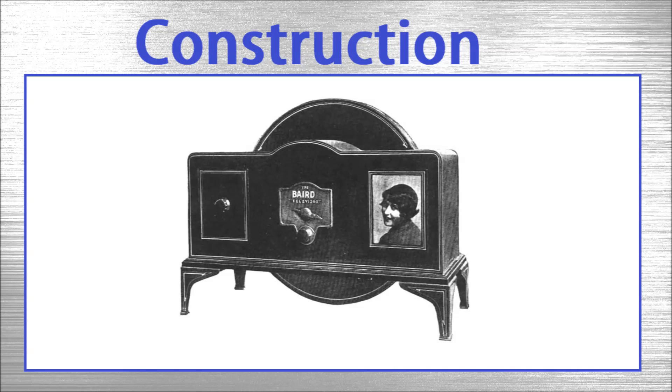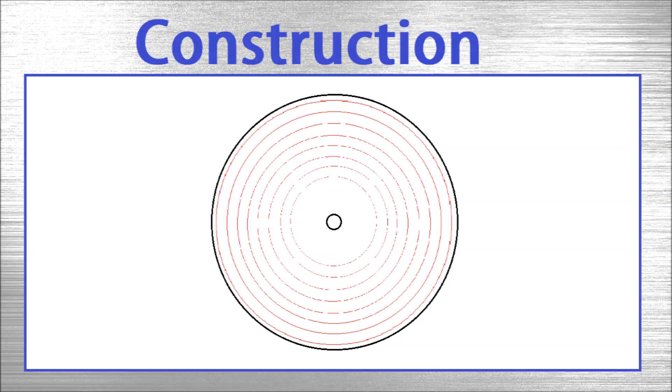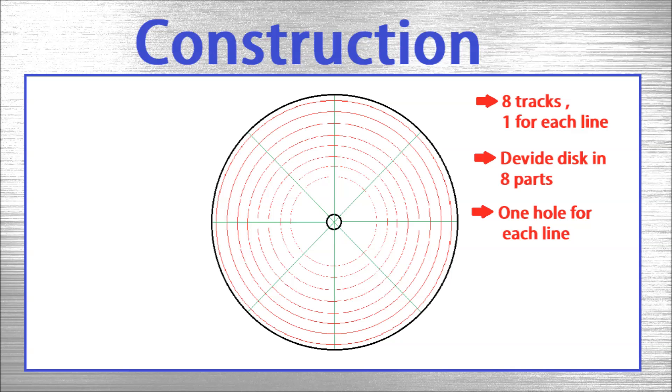The most important part of the televisor is the disc. It's called the Nipkow disc. In this example the disc will have 8 holes. In real televisors this was generally around 32, but it could also be higher. The holes are placed in a spiral design.